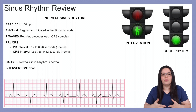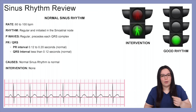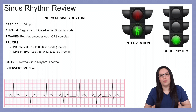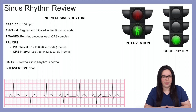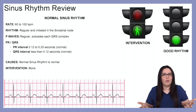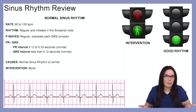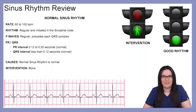P waves are regular and they always precede each QRS complex. Our PR interval is normal, 0.12 to 0.2 seconds. Our QRS interval is less than 0.12 seconds, which is also normal. Normal sinus rhythms are normal, so there's not really any intervention that we need to do for this.